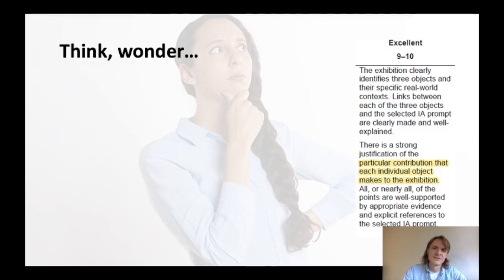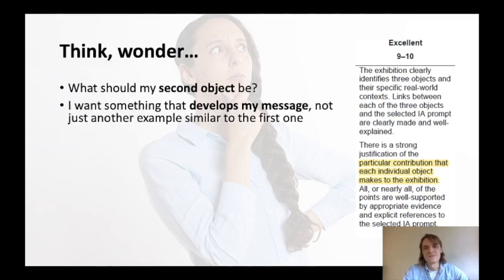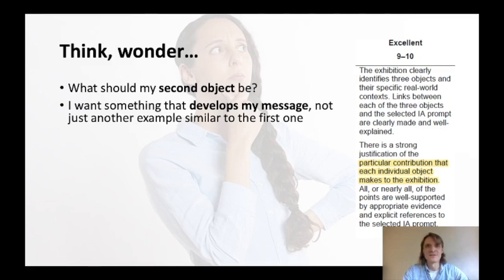Let's go over to the second object. I'm looking at an excerpt from the TOK Exhibition Assessment Instrument, particularly the highlighted words: 'there is a strong justification of the particular contribution that each individual object makes to the exhibition.' This suggests that if each individual object makes a particular contribution, I can't select the second object in a way that repeats the same kind of idea already conveyed by the first. I should select the second object to develop the message, not just find another similar example illustrating the same point.